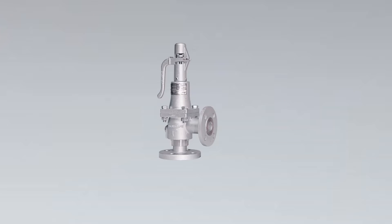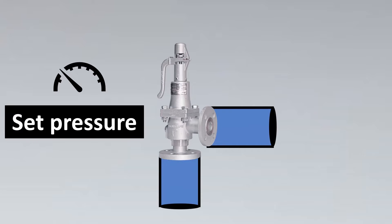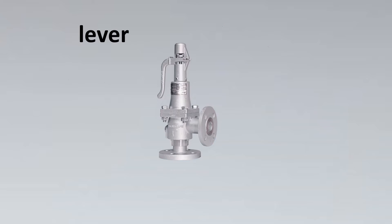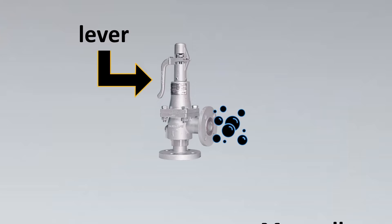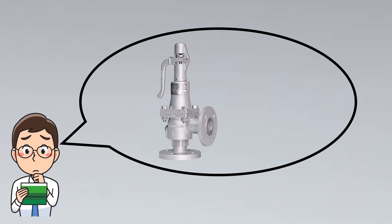For a relief valve, the basic function is that you set a pressure to it. There is a fluid which is going to hit the relief valve, and once the set pressure is hit, the relief valve is going to relieve it out to the atmosphere. This is a very automatic process where there is very little human intervention. However, the lever is used to manually lift the relief valve, and the liquid is removed through manual intervention.